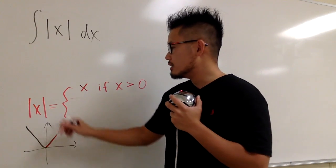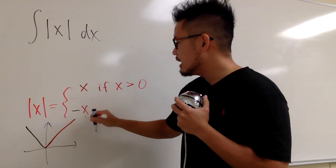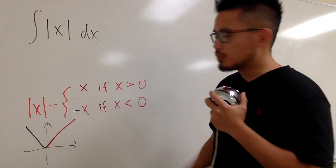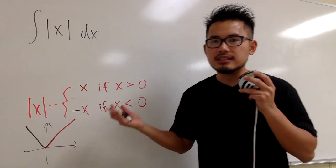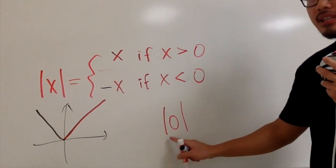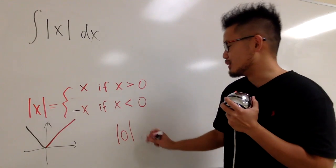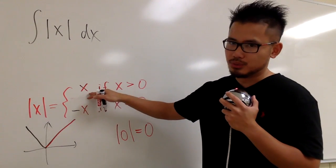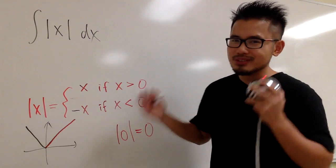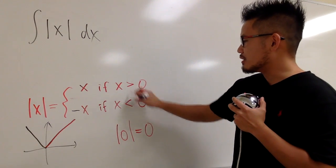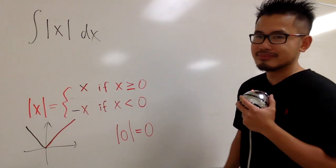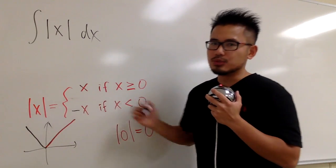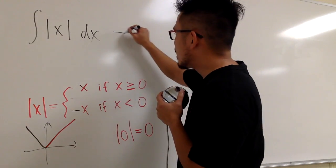The second part is negative x, and this happens when x is less than zero. What about when x is exactly zero? Absolute value of zero is still zero, and it doesn't matter which piece you use since negative zero is also zero. So you can put the equal sign on either piece — up to you. This is how you break absolute value of x down as a piecewise function.